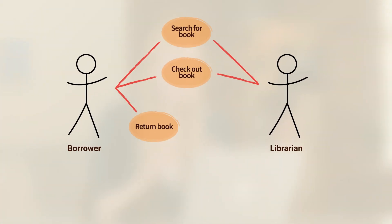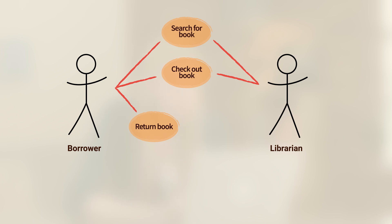Here we are back in our librarian-borrower diagram. Let's look at how an example of extend might play here. We said that when a borrower returns a book late, there should be some sort of late fee assessed. I can therefore add this to my diagram by just saying 'pay late fee.' Now I'm going to connect that to the 'return book' use case and connect them via extend.